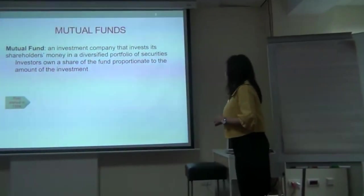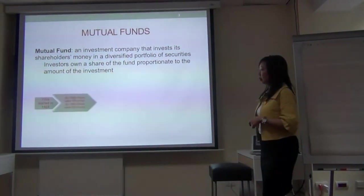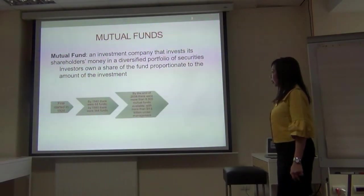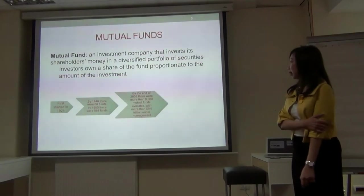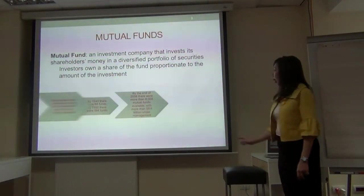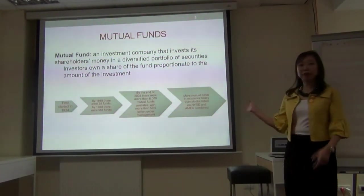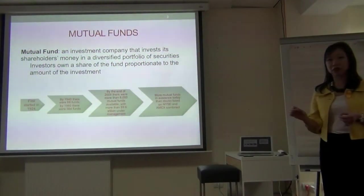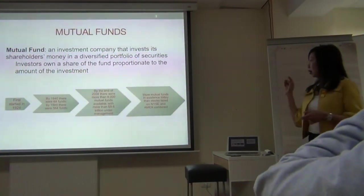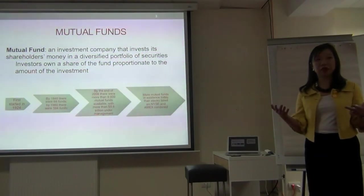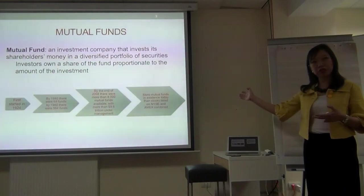When did mutual funds start? The first fund was started in the US about a century ago — in 1924. Through the years, more and more funds emerged: by 1940 there were 68 funds, and by 2008 there were about 8,000 mutual funds in the market managing around $9.6 trillion. This is US data.